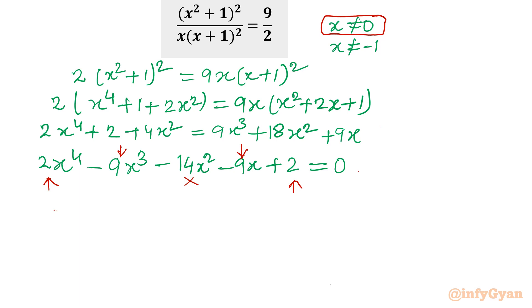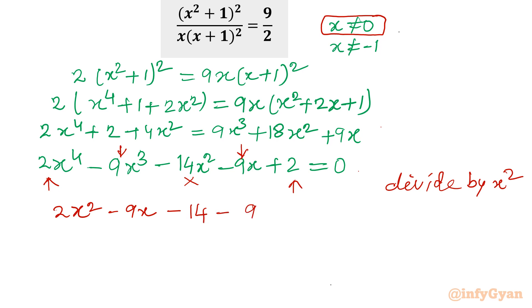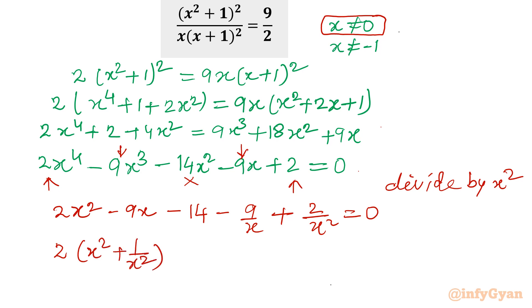Dividing both sides by x², the equation becomes 2x² minus 9x minus 14 minus 9/x plus 2/x² equal to 0. Grouping the first and last terms and the second and second-last terms: 2(x² + 1/x²) minus 9(x + 1/x) minus 14 equal to 0. This is our reciprocal equation.